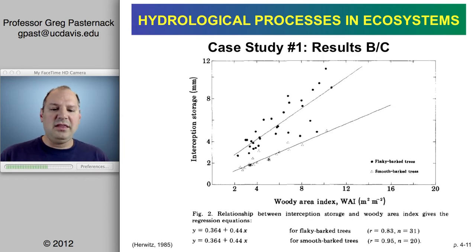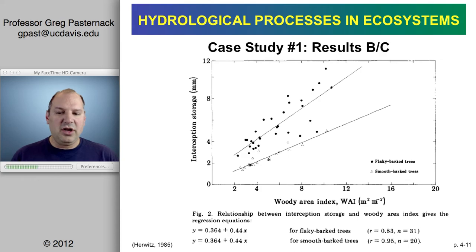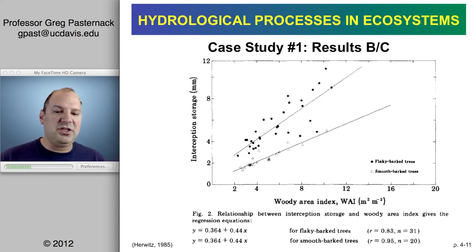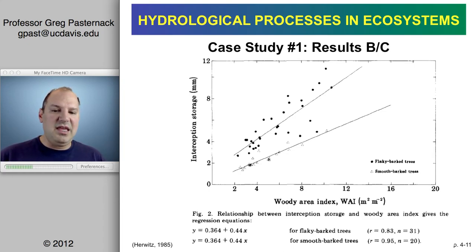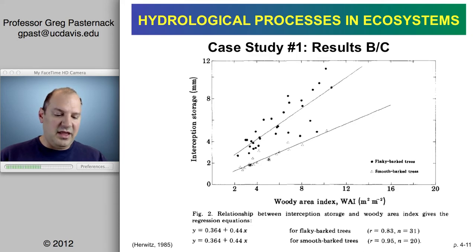Looking at the same relationship with the woody area index instead of the leaf area index, we now have a much better regression. The magnitude on the y-axis is the same range, but each individual regression line is a better predictor, and we see a strong differentiation between flaky bark and smooth bark trees.